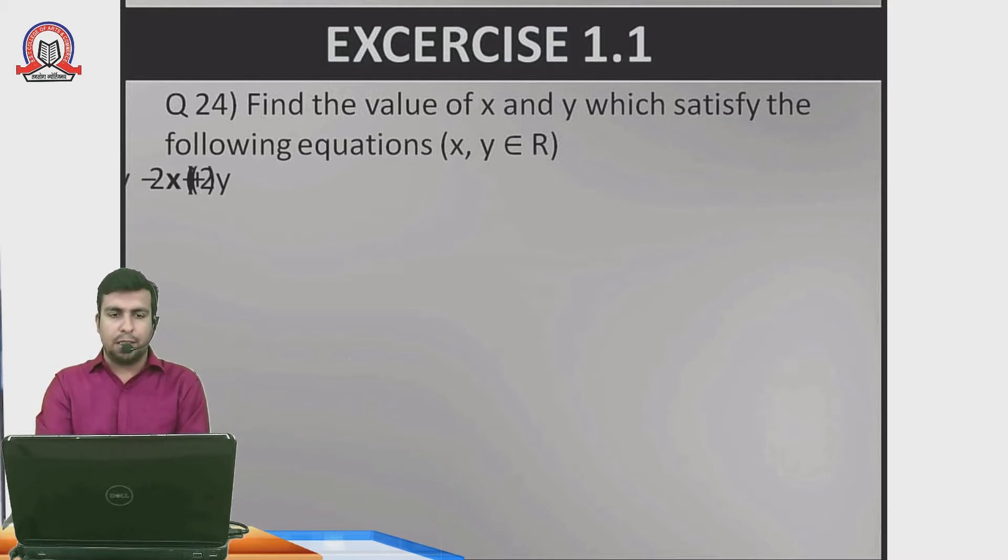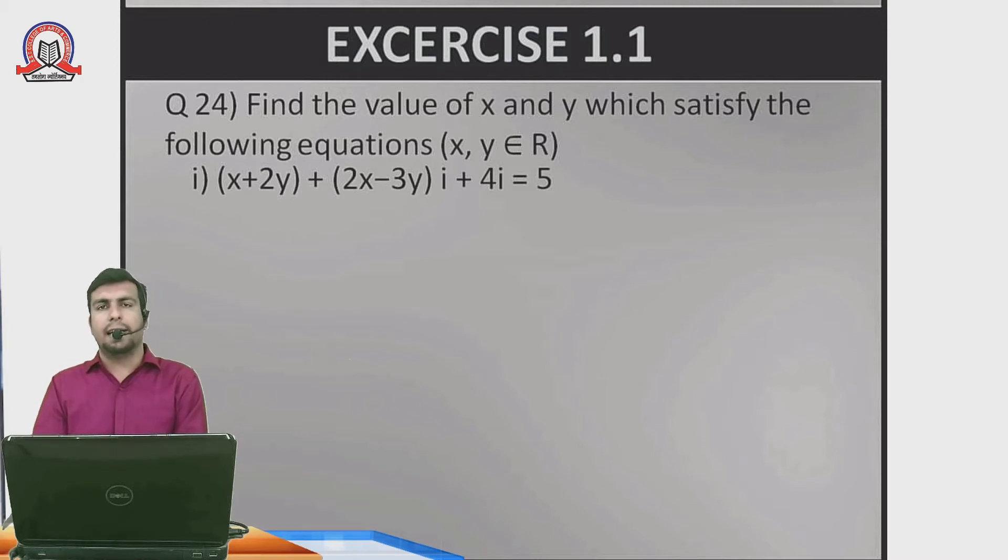Question number one: x plus 2y plus (2x minus 3y)i plus 4i equals 5. First, you need to ensure that the left-hand side has only one real term and one i term. In this case, we shift 4i to the RHS, giving us x plus 2y plus (2x minus 3y)i equals 5 minus 4i.